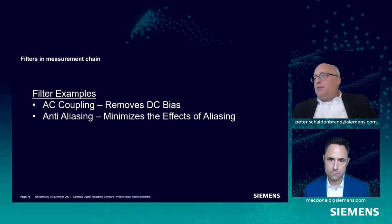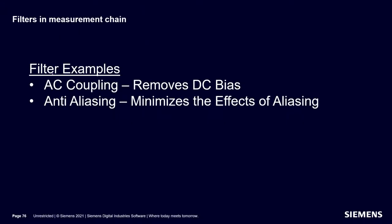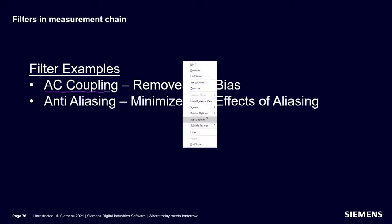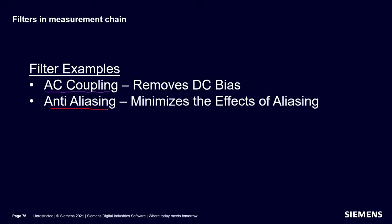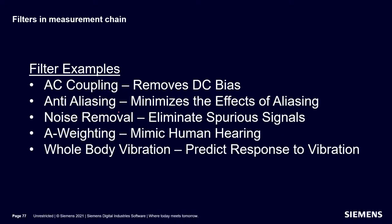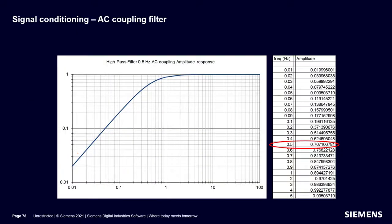We've done a lot with filters so far in the presentation. AC coupling removed the DC bias. We had an anti-aliasing filter to prevent aliased data. We could use filters for noise removal. And there are other filters used for things like A-weighting and whole-body vibration.